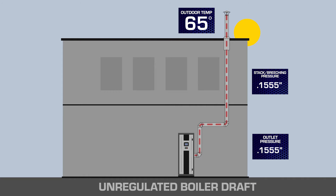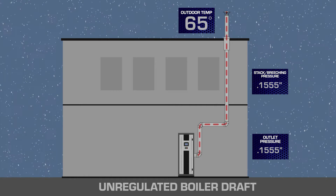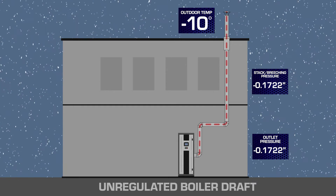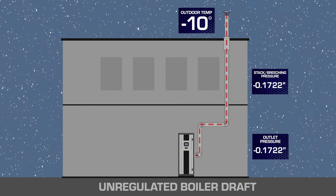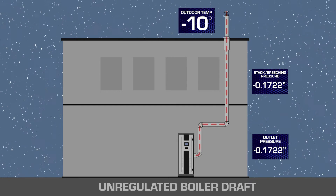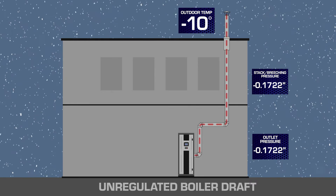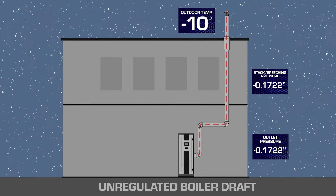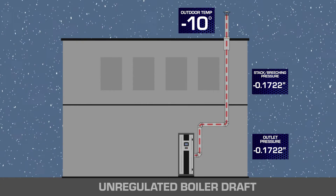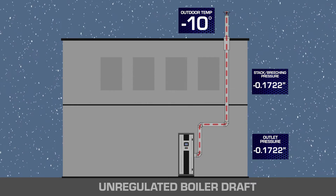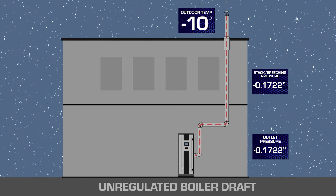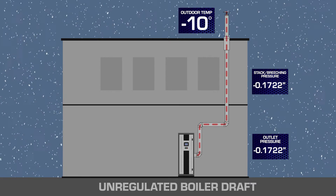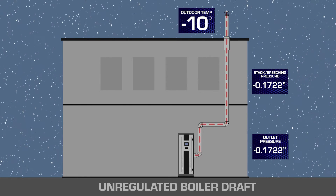Even in a poor draft condition scenario. Second, we need to make sure we stay inside the appliance's maximum negative outlet pressure range, and this is done at a low ambient temperature, maximum draft scenario, and low firing rate. If the appliance outlets go negative, we are now having Category 2 operation, which is loss of efficiency and flame instability.